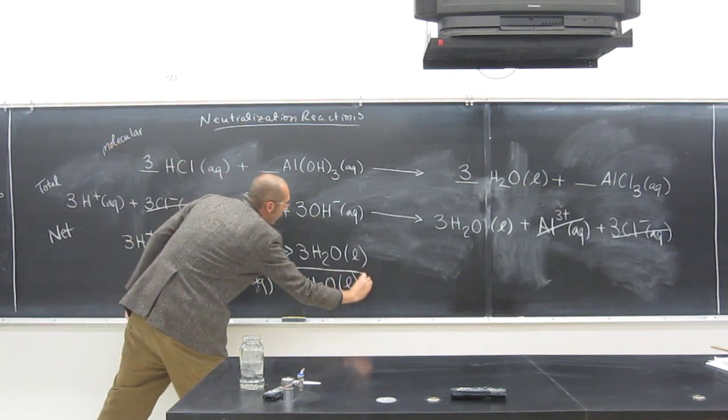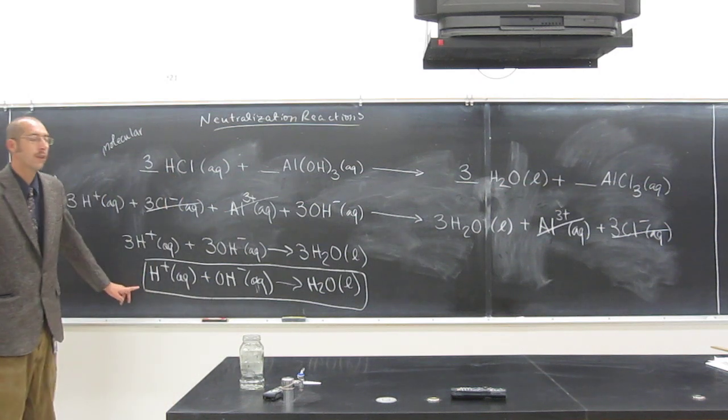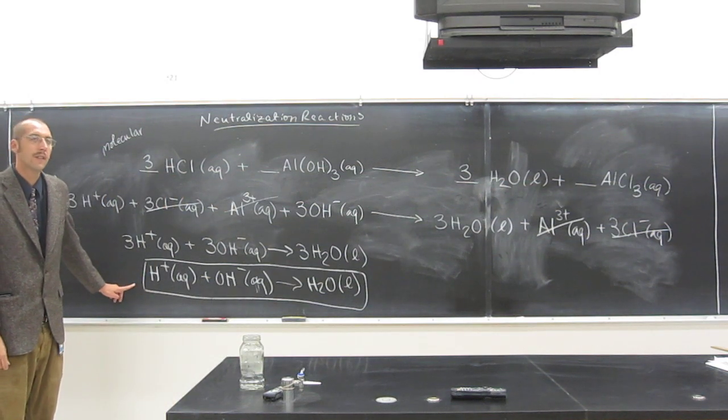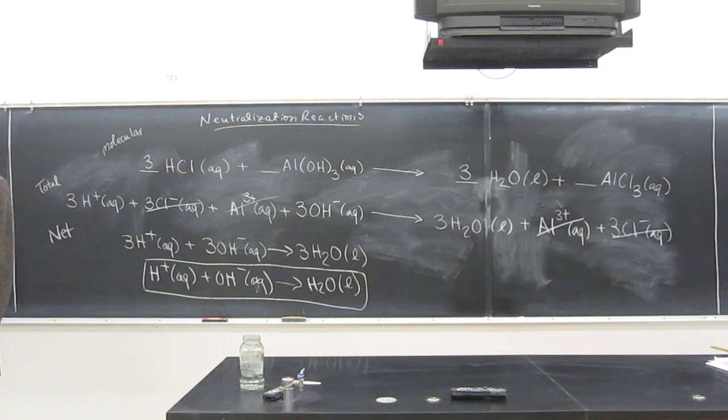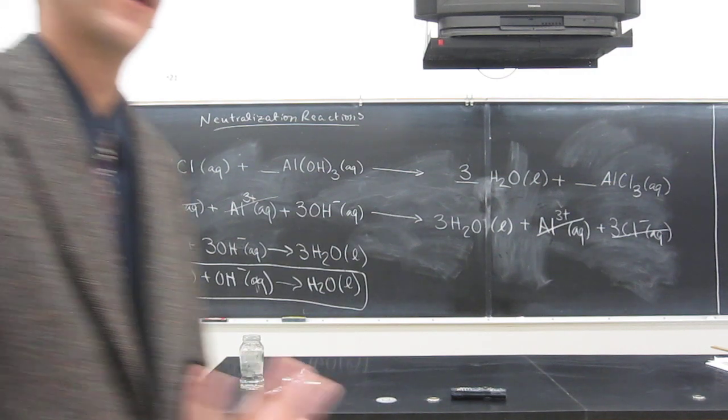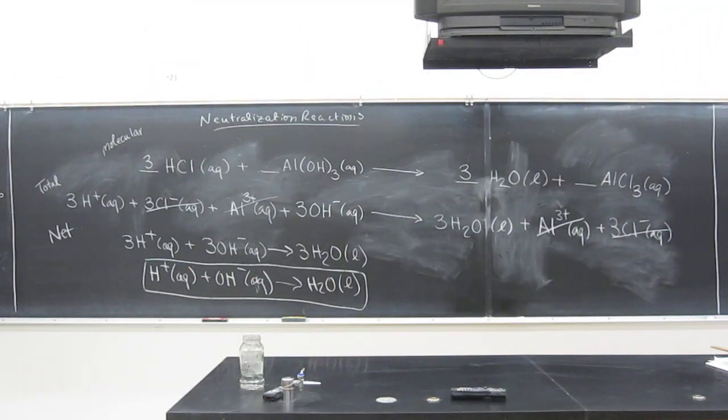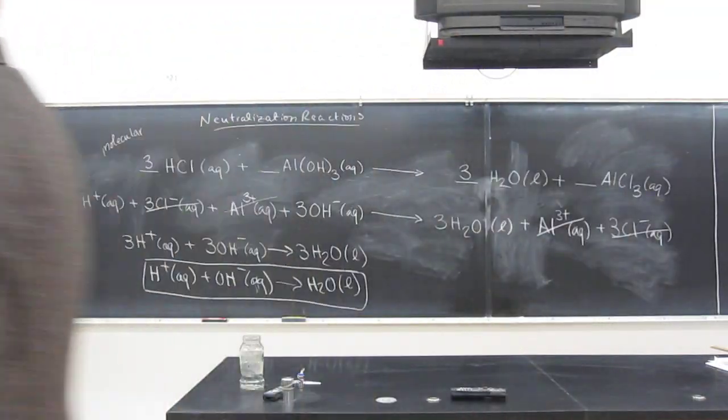So that's the net ionic. The cool thing about acid-base reactions is that's always the net ionic equation. Always the net ionic equation. So got an acid-base reaction, write that first, you know, if it helps you out. That's always, always the net ionic equation. Is everybody okay with this?